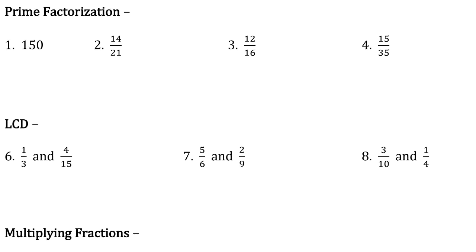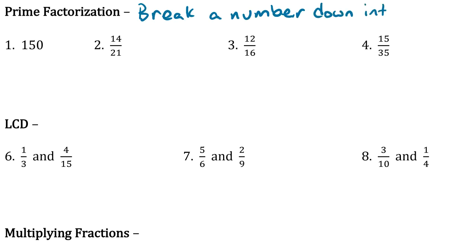Hey everyone, in this video we're going to be talking about prime factorization and LCD. So we're going to start with prime factorization, which just means we're going to break a number down into only prime factors. A prime factor is one that can't be broken down anymore. For example, 5 is prime because you can only multiply 1 and 5 to get 5. 10 wouldn't be prime because you can multiply 2 and 5 to get 10, so it can be broken down into 2 and 5.